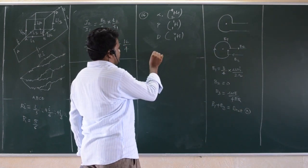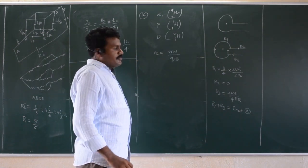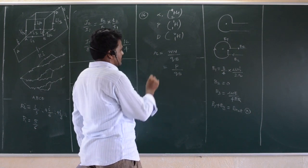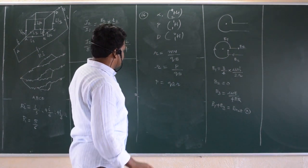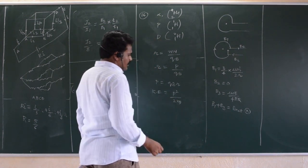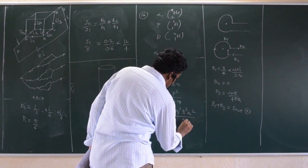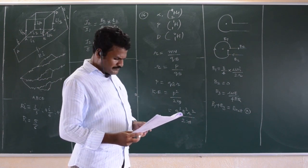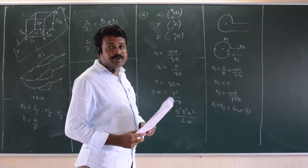The radius of the circular path is MV by QB, which I can write as momentum by QB, so momentum is equal to QB into R. Kinetic energy is equal to P-squared by 2M, so kinetic energy can be written as Q-squared B-squared R-squared by 2M. This is the formula for kinetic energy in a cyclotron. Substitute Q and B — they are under the same conditions — and find which particle will have minimum kinetic energy.